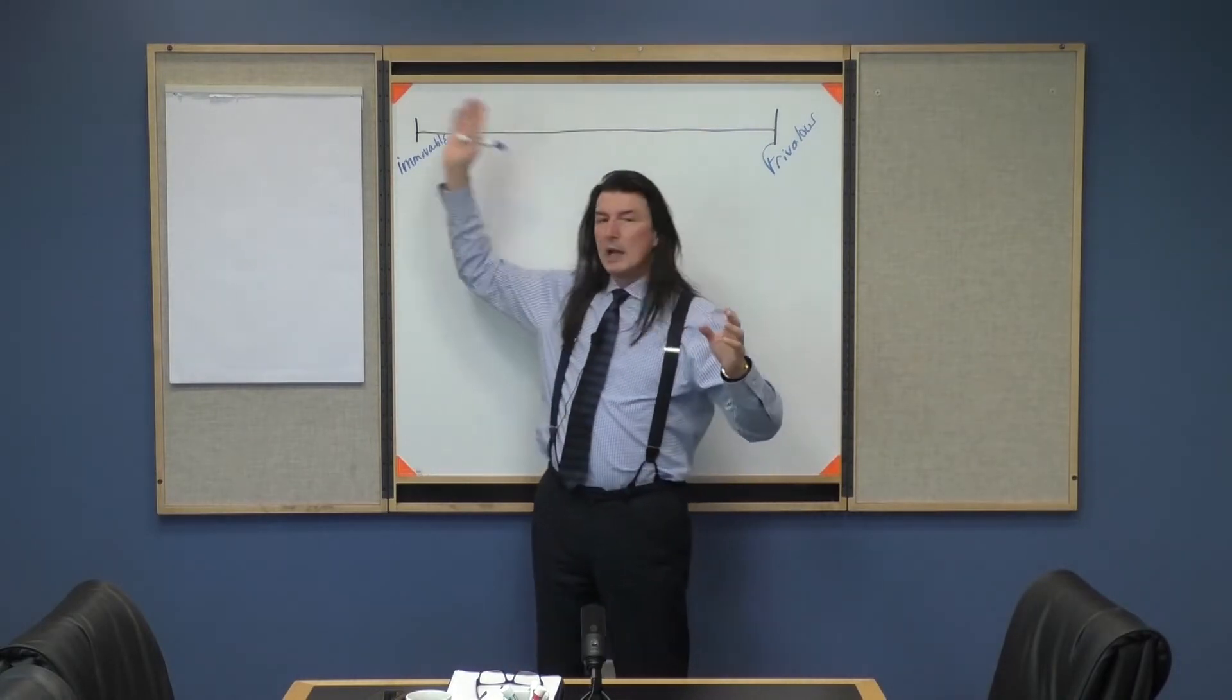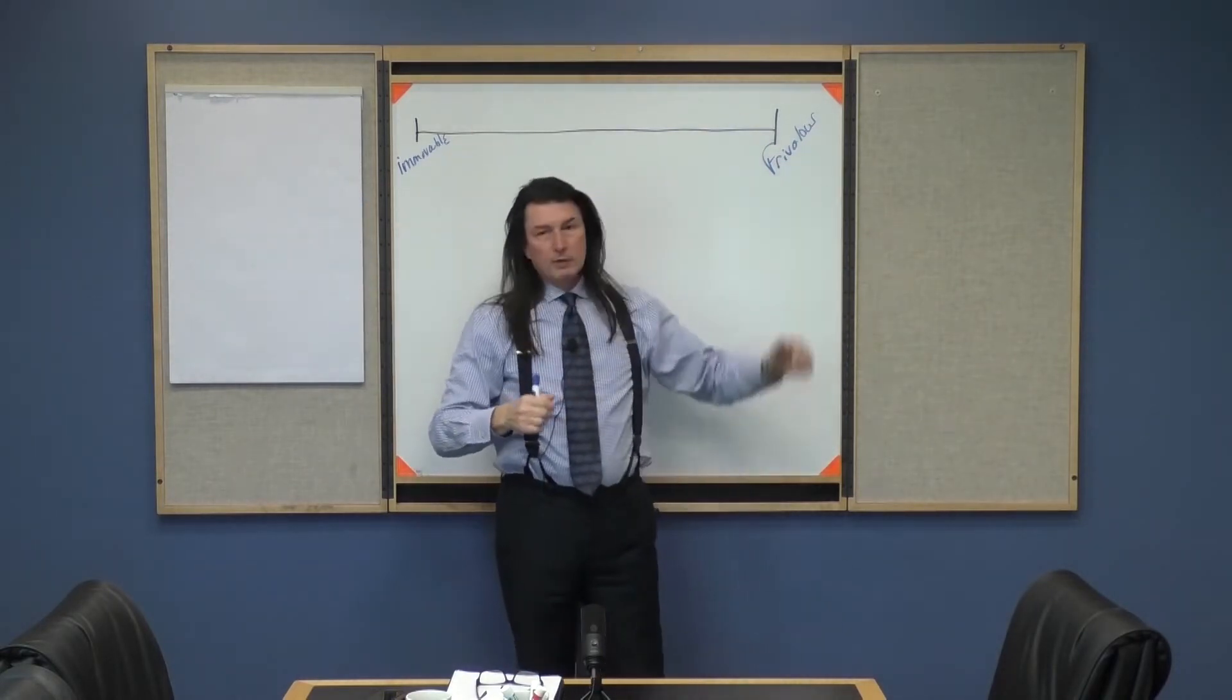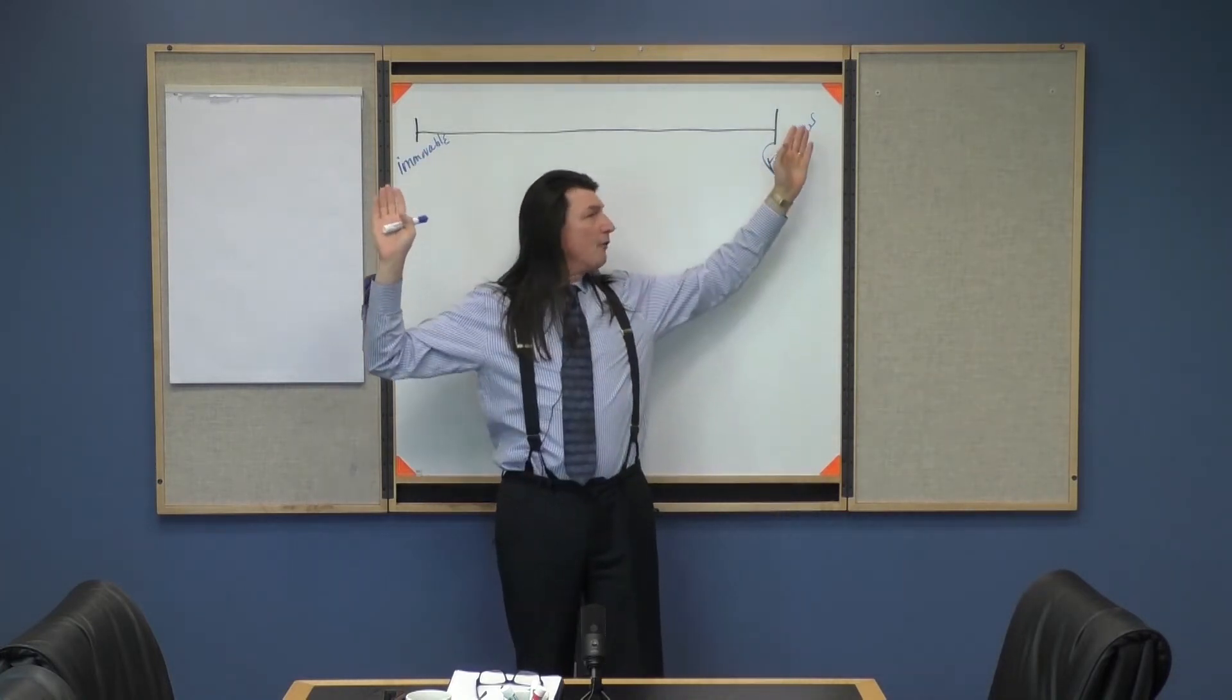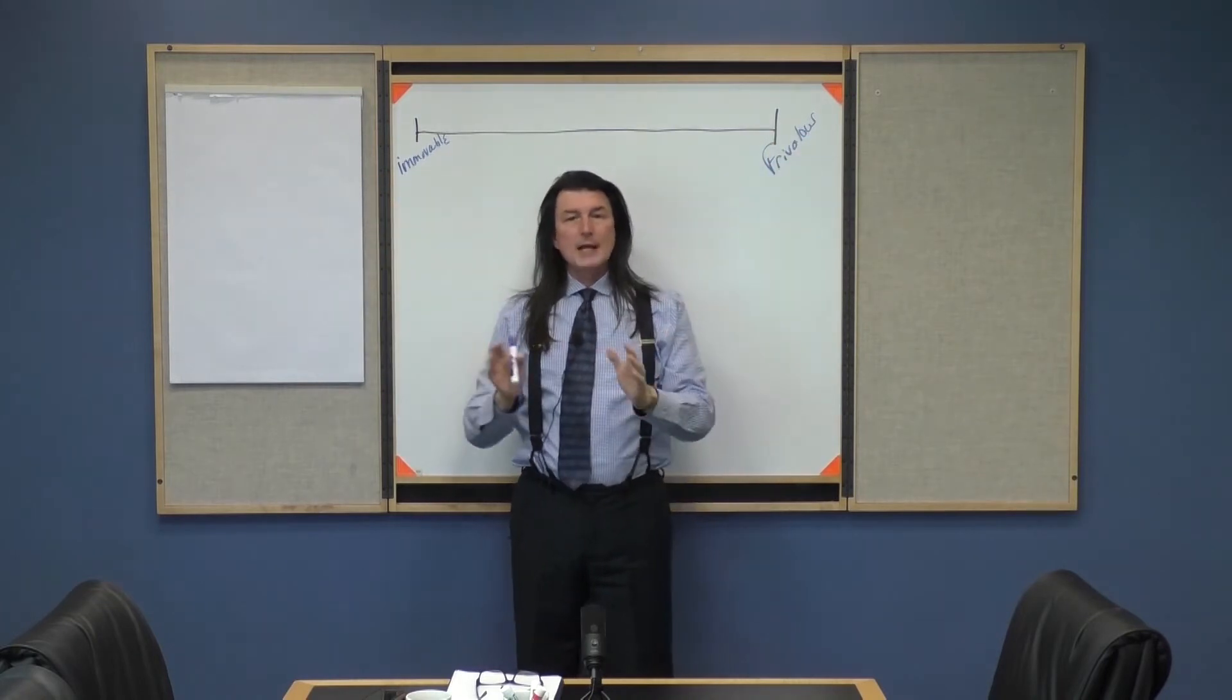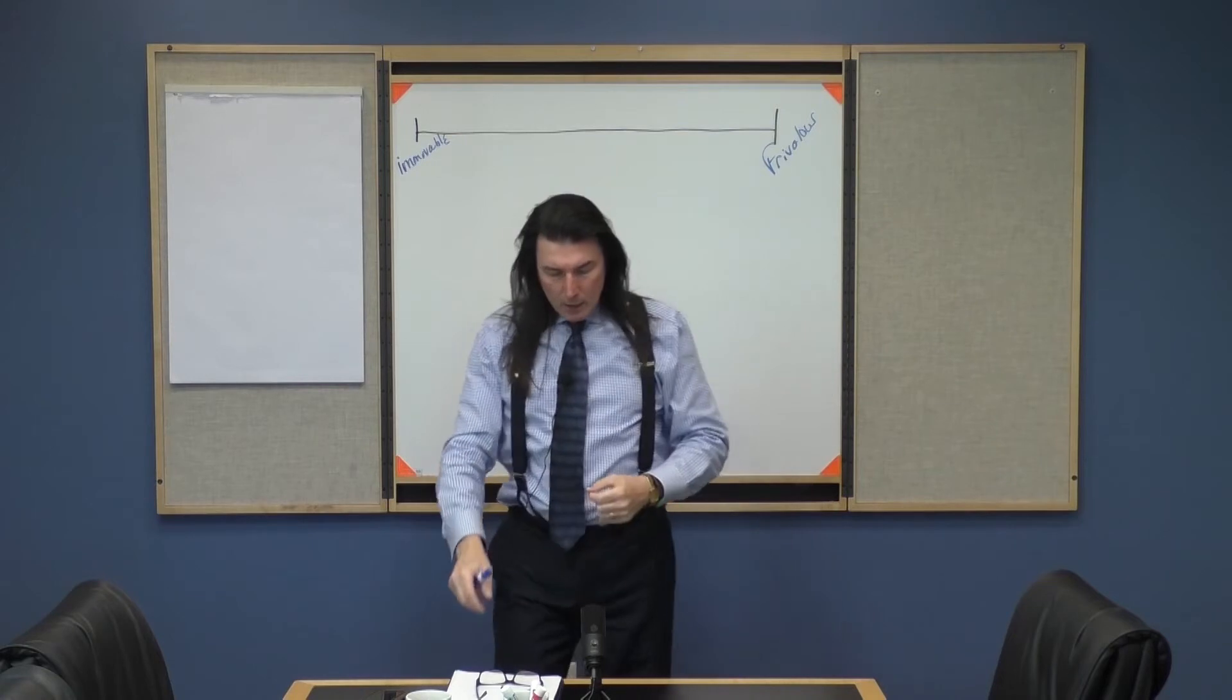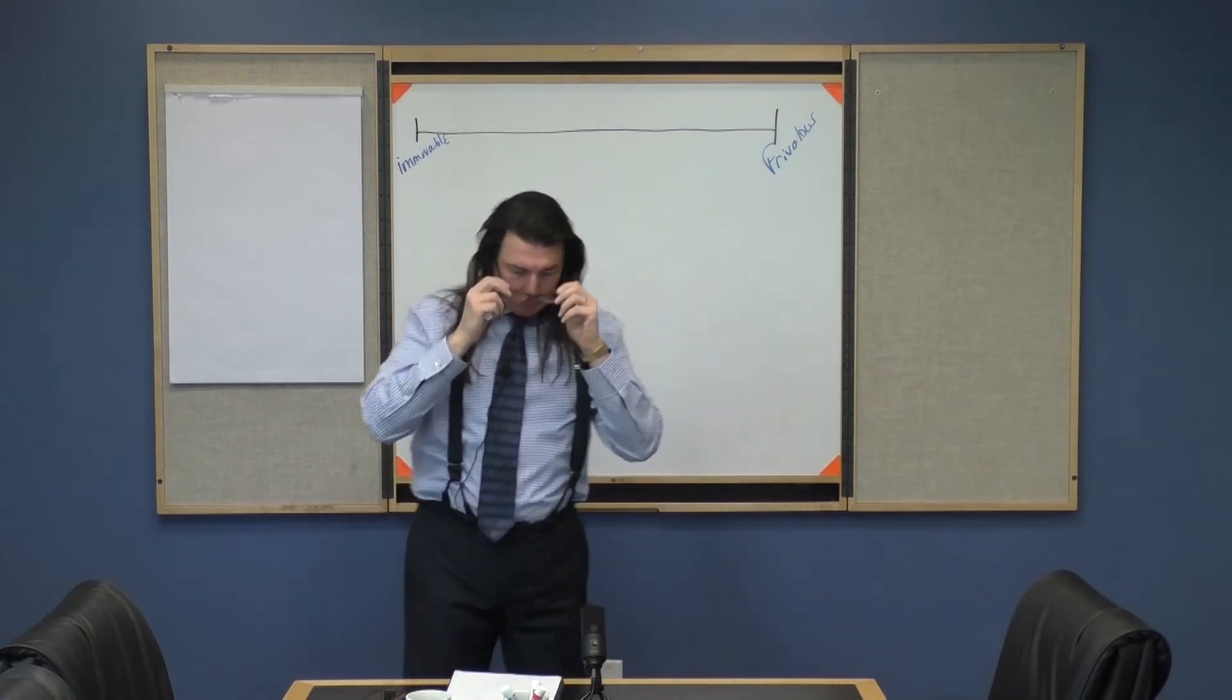All right? So you've got these two continuums, immovable on one side, frivolous on the other side. And what we find is most people do not actually fall on the far ends of the scale. The vast majority are going to be the ones that we're primarily going to focus in here in the middle because that's where the real value is.